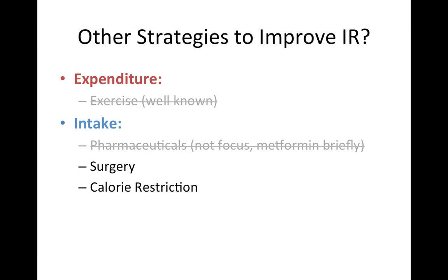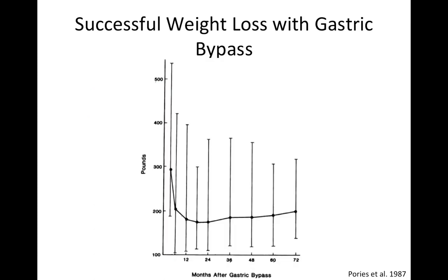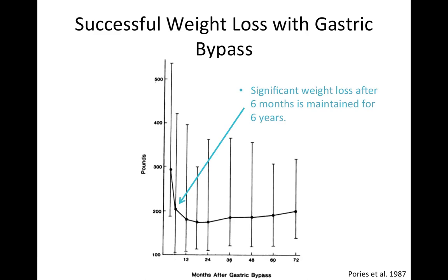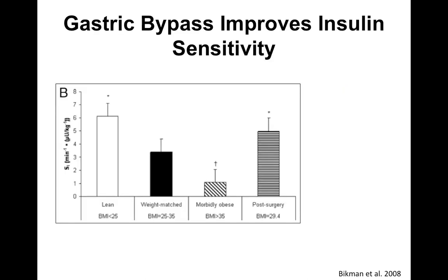On the intake side, we have a few options. We talked about pharmaceuticals briefly, but that's not the focus of the course. What I want to look at now is surgery, and then the possibility that calorie restriction can bring about all these positive changes on its own. The calorie restriction idea actually sprang from the success that surgery seemed to provide to these type 2 diabetics. Overall, surgery is quite effective. It's been known for some time that gastric bypass surgery resulted in significant weight loss after only 6 months post-surgery, and then these reductions in weight were maintained for 6 years after surgery.